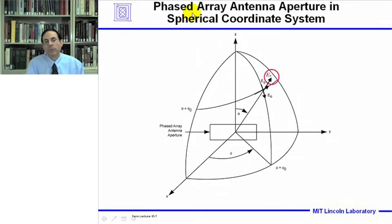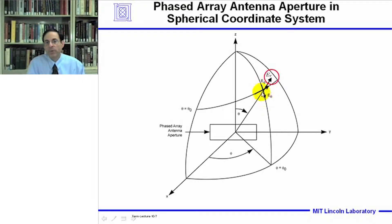This slide shows a phased array antenna aperture in the spherical coordinate system, showing the polarizations for the array. In the far field, we normally talk about just the e-theta and e-phi components. But in the near field, we have to talk about the radial component as well, and that's what we'll be discussing in this lecture.